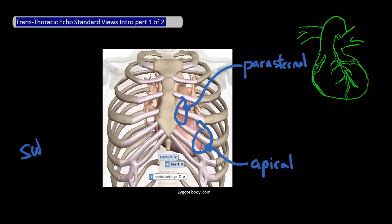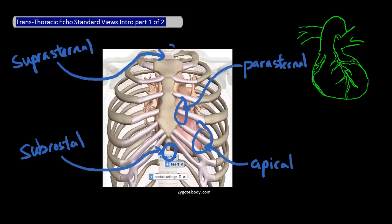the subcostal position, which is from right underneath the ribcage, and the suprasternal notch position, which is just above the sternal notch. For each of these four positions, there are standard cuts through the heart that you can make by varying the angle and rotation of the ultrasound transducer.